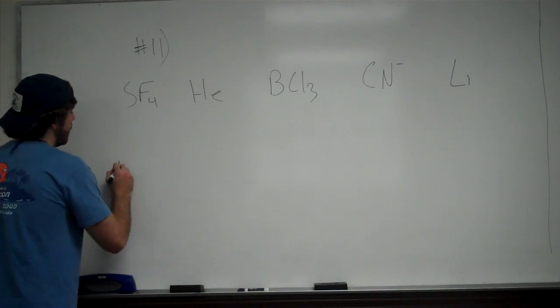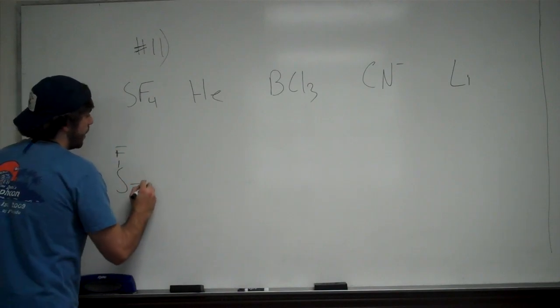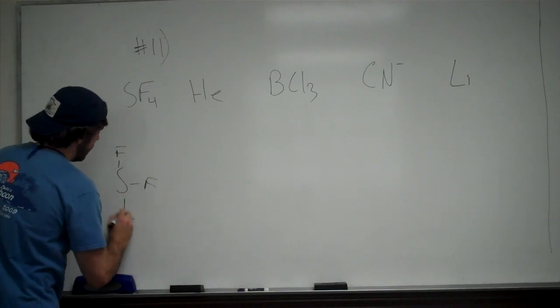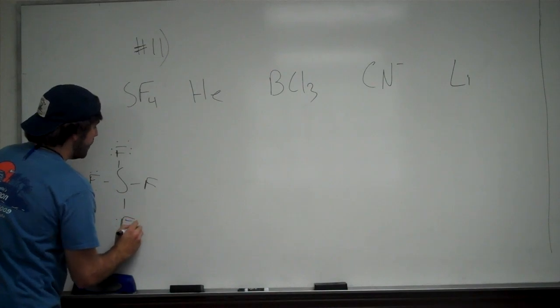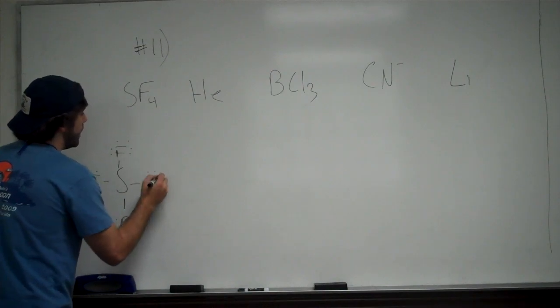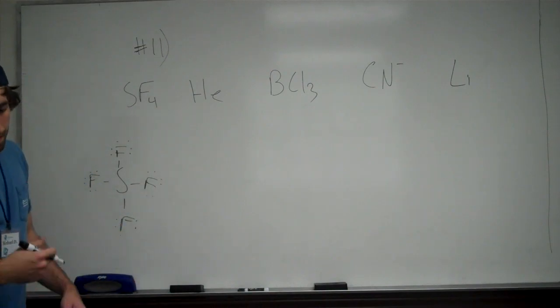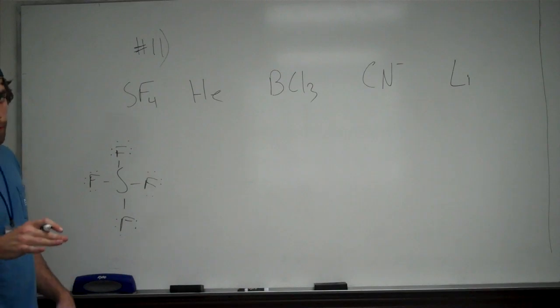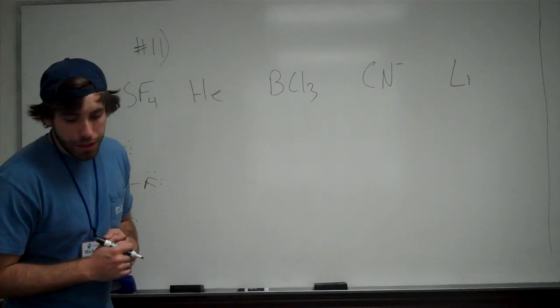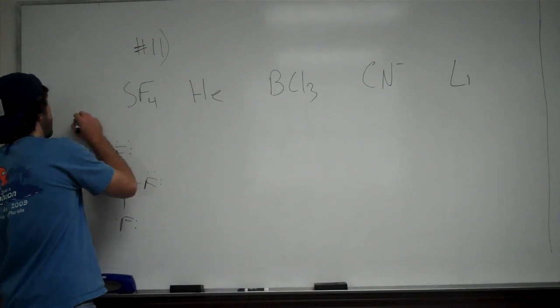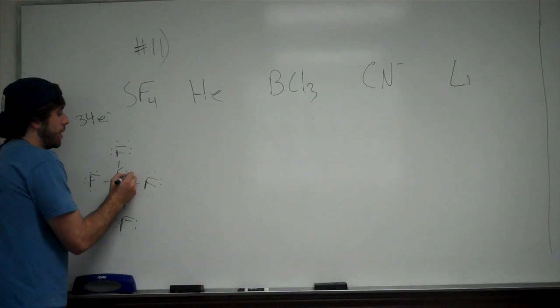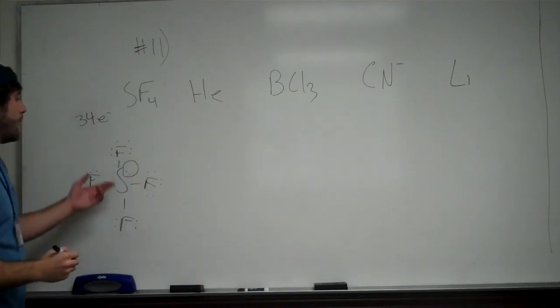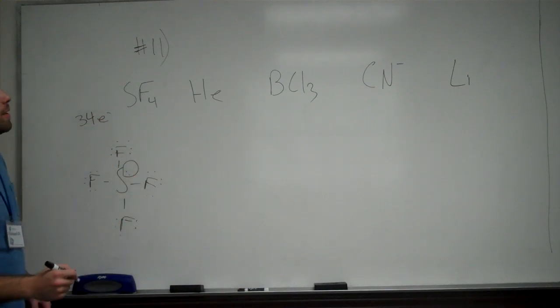So for SF4, we're going to get... So once we fill all this in, we initially think that it is following the octet rule, right? But actually, if we total up the electrons like we always are supposed to do with our Lewis structures, we get 34 total electrons. This only accounts for 32 of those, so there's actually a lone pair on the nitrogen making it 5 bonds, not following the octet rule.